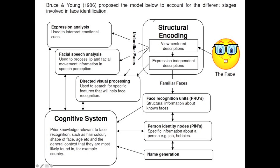This is Bruce and Young's 1986 model of face recognition. It's a stage model, which means that the process involves certain stages that will more often than not be sequential — stage one will have to happen before stage two. Looking at each individual stage, we begin with structural encoding. As soon as the face is seen, the structural encoding area of the brain becomes activated and face recognition has begun. It builds a very basic representation of the face by analysing the expression of each feature.